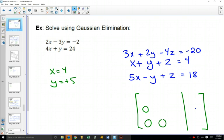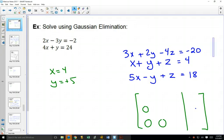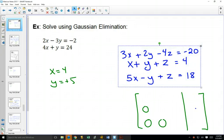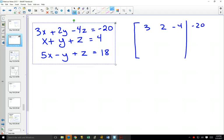We are going to do this three by three one together. Here's our goal, to get those zeros in that bottom corner. I'm going to copy. So our augmented matrix for this one is going to be 3, 2, negative 4, negative 20; 1, 1, 1, 4; 5, negative 1, 1, 18.